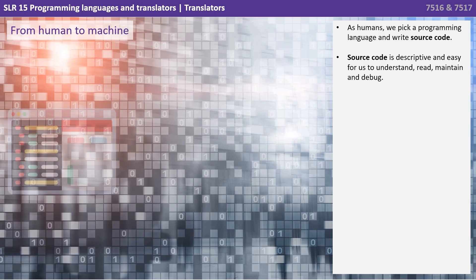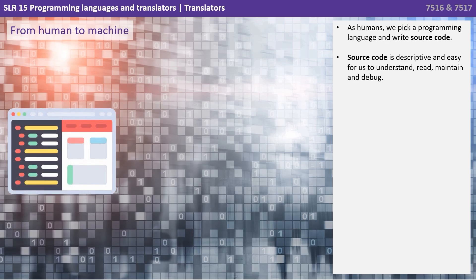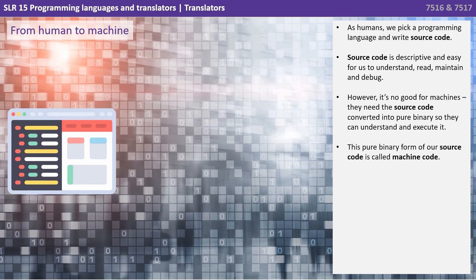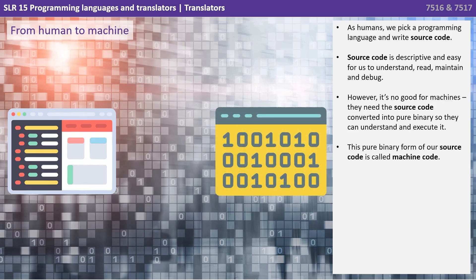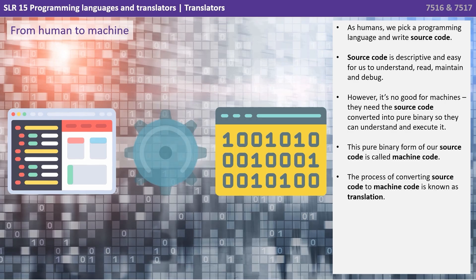As humans we pick a programming language and we write source code. Source code is descriptive and easy for us to understand, read, maintain and debug. However, it's no good for machines. They need the source code converted into pure binary so they can understand and execute it. This pure binary form of our source code is called machine code. The process of converting source code to machine code is known as translation.